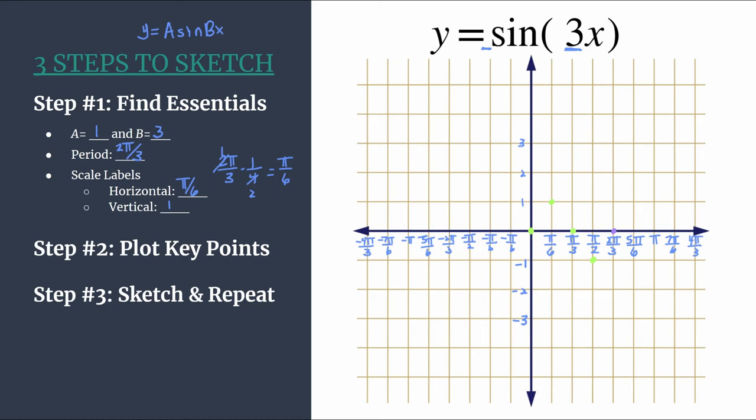Step three is to sketch and repeat. So sketch in our sine curve. Put our sine curve here and let's repeat. Starting again at two pi over three zero, we know we have zero, maximum, zero, minimum, repeat. You can see if you would continue in this direction, we have one cycle that happened at two pi over three where it finished, and a second cycle happened at four pi over three.